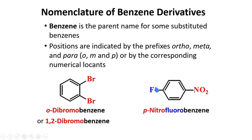We call this compound o-dibromobenzene, or using numerical locants, 1,2-dibromobenzene. In this next case, we have a fluorine atom and a nitro group located at carbon one and carbon four.